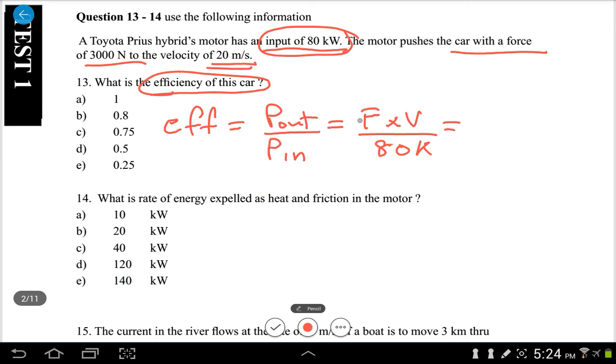And force here 3000, you can go with 3k, multiply with the velocity which is 20, divided by 80 kilowatts. Now this and this cancels, this and this cancels, basically you're left with 6 over 8 or three quarters.